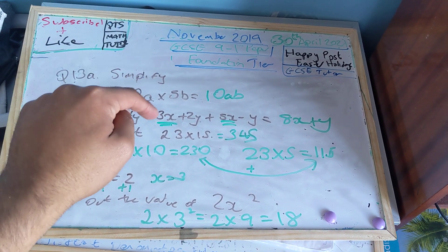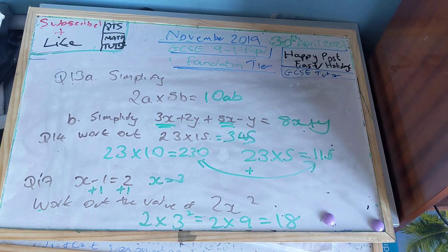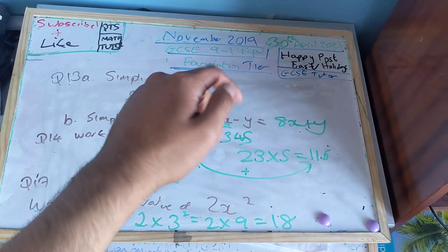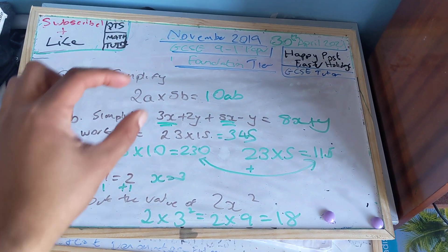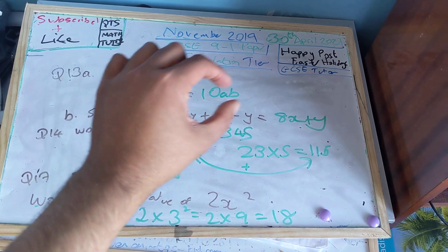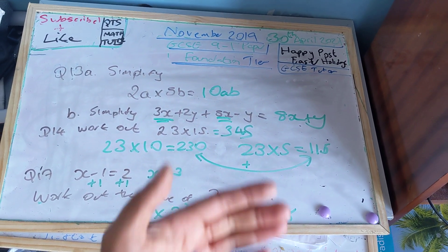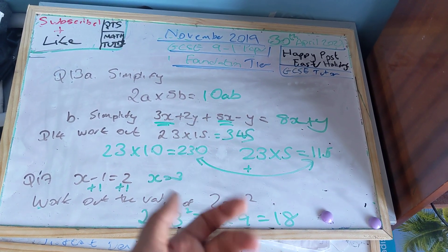Part B, simplify 3X plus 2Y plus 5X minus Y. Well, 3X plus 5X equals 8X, so collecting like terms, 2Y minus Y is plus Y. So it's 8X plus Y or Y plus 8X, either way is correct.